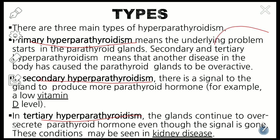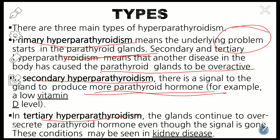In primary hyperparathyroidism, the problem lies in the parathyroid gland itself. Secondary hyperparathyroidism means that another disease in the body has caused the parathyroid gland to be overactive — there is a signal to the gland to produce more parathyroid hormone. In secondary hyperparathyroidism, the parathyroid gland is absolutely normal, but a signal — in the form of low vitamin D — is sent to the gland to produce more parathyroid hormone.